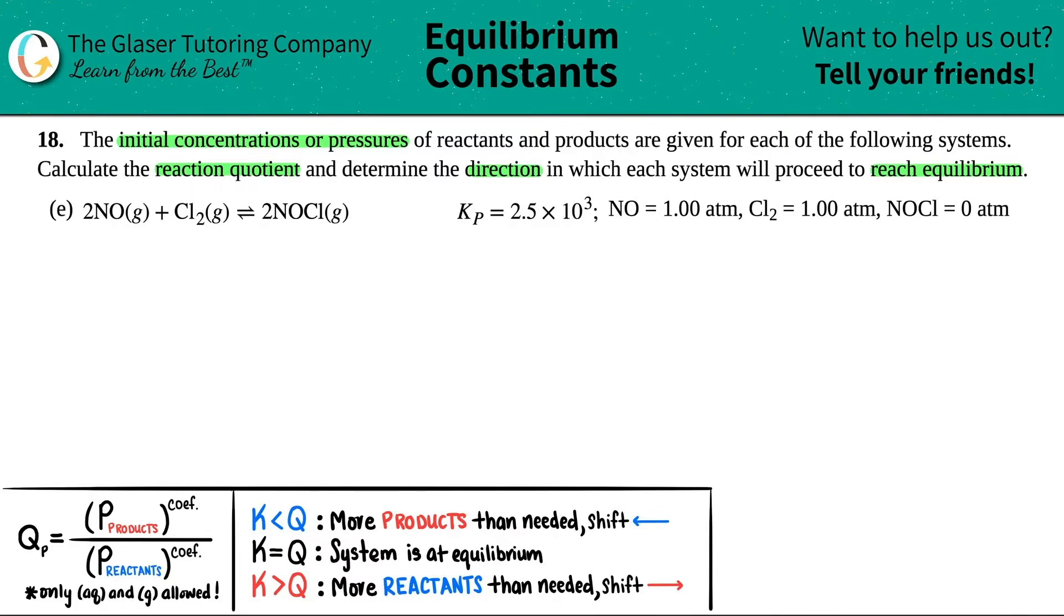Then we have letter E. Now I see that I have a balanced equation here. I got coefficients, so I'm going to assume it's balanced. So the first thing I'm going to do is I'm just going to rewrite this out bigger so that we can work with it. We got 2NO(g) plus Cl2(g). Those are gases. This comes to equilibrium with 2NOCl, and that's also a gas.